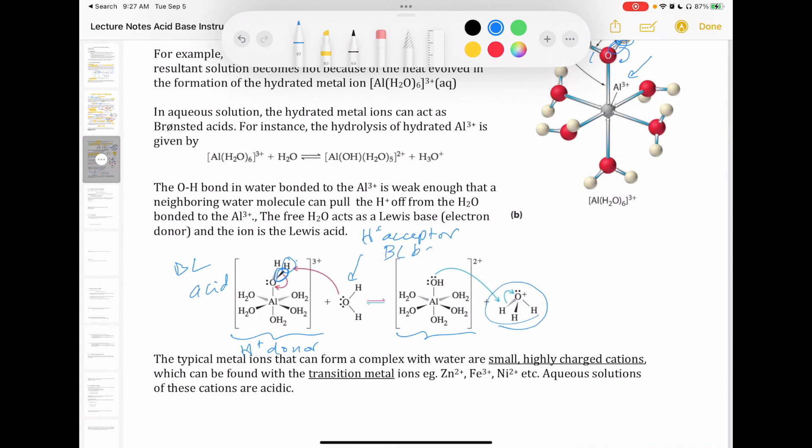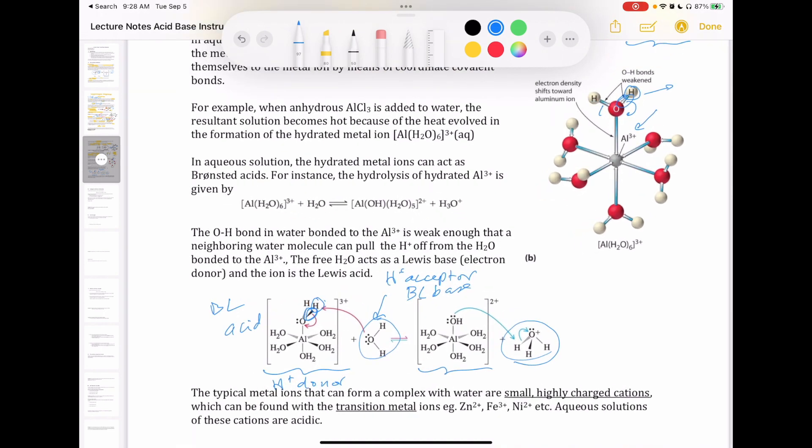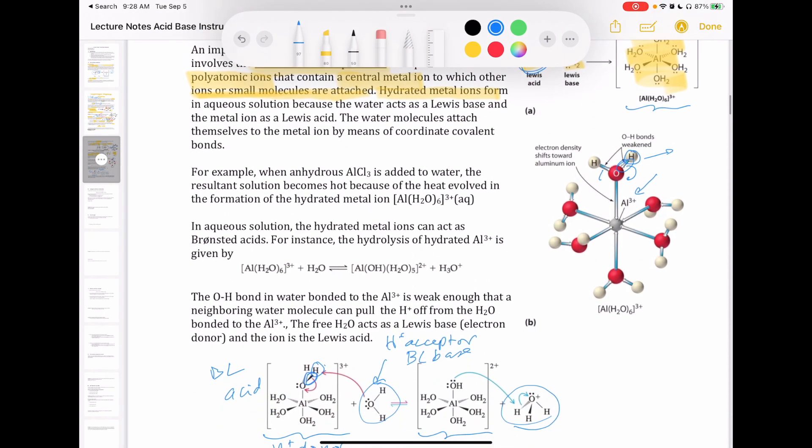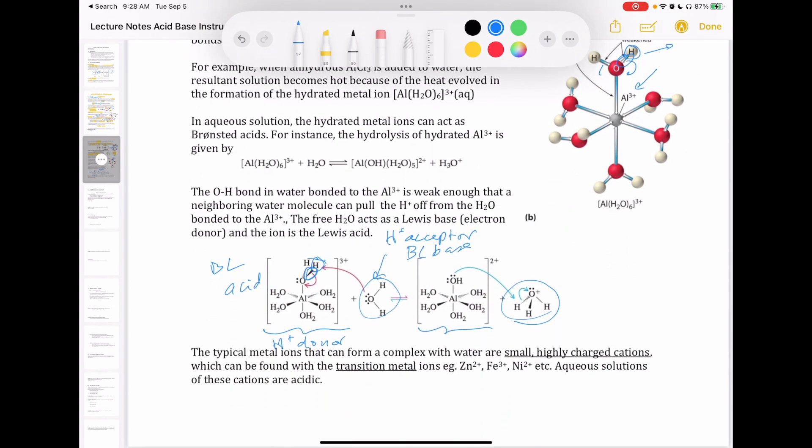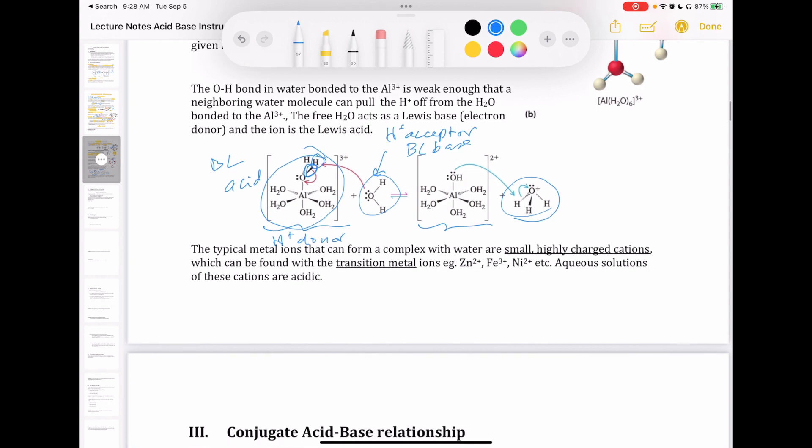So water is a Bronsted-Lowry base. So now you can see how these small, highly charged cations can act as acids. One is aluminum ion as a Lewis acid when it was on its own here. And then once it becomes that hydrated metal ion, the aluminum ion acts as a Bronsted-Lowry acid because there's another water that comes along that can accept that proton, thereby making the hydrated aluminum ion a Bronsted-Lowry acid.